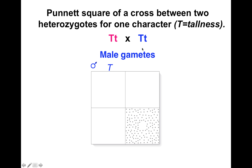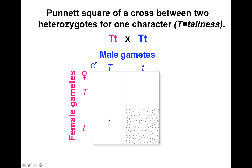For our heterozygous individual, we can have either a big T or a little t allele. The same is true for the female gametes — they're either a dominant or recessive allele. In our boxes, we add the genotypes of the individuals produced from these crosses: big T big T, big T little t, big T little t, or two little t's. So our genotypes are in a one to two to one ratio, but our phenotype, because of the dominance of the tallness allele, is three to one.